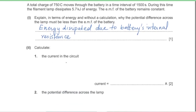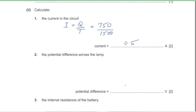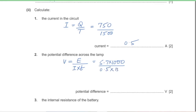Part 2: calculate the current. I = Q/t = 750 / 1500 = 0.5 A. Part 3: calculate the PD across the lamp. PD = energy / (current × time) = 5700 / (0.5 × 1500) = 7.6 V.